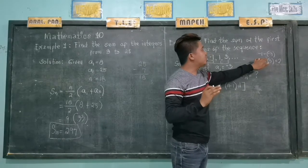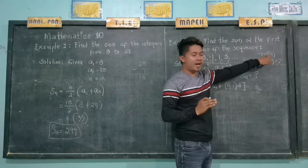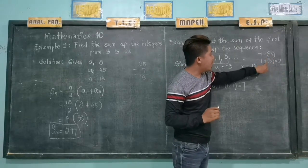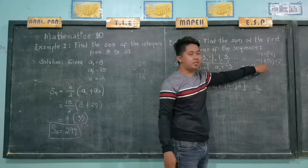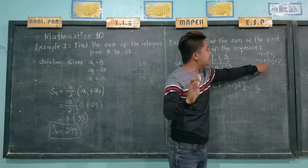Again, we will change the sign of the subtrahend and then proceed to addition. So from negative, we have positive, and then proceed to addition. Then now, the answer is 2.